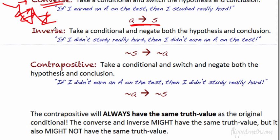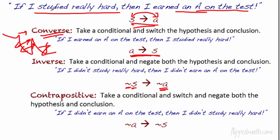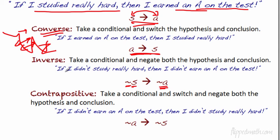The inverse is where you negate both parts without switching the order. So 'If I studied really hard, then I earned an A' becomes 'If I didn't study really hard, then I didn't earn an A on the test.' You always go back to the original conditional statement. The contrapositive — you both flip the order and negate both parts: 'If I didn't earn an A, then I didn't study hard.'